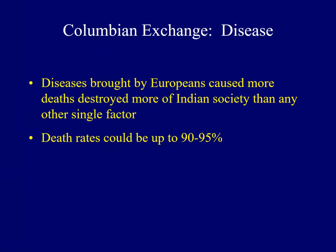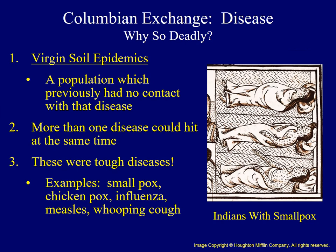Another aspect of the Columbian Exchange would be disease. There's debate among historians as to exactly how many American Indians died as a result of exposure to diseases brought by Europeans, but they were devastating. Diseases led to more deaths and did more to disrupt Native American society than any other single factor. In some cases, 90 to 95 percent of Indian tribes were destroyed as a result of their exposure to European diseases. There are explanations as to why these diseases were so deadly: first, they were virgin soil epidemics — because Native Americans had no previous exposure, they had no acquired immunities, so the diseases were very deadly and spread rapidly.